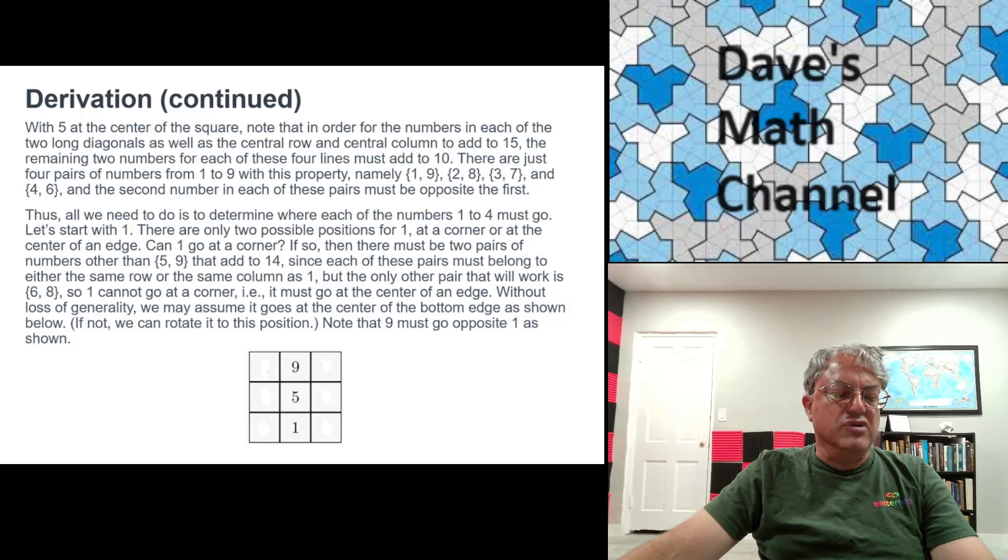So notice that if it goes in a corner, we know that it already has to belong to the same long diagonal as 5. So we have 1-5-9. That's automatic. But then it has to belong to both a row and a unique row and a unique column, namely the top row. If you're putting one in the top left, which you can do without loss of generality, you can always rotate the square if you need to.